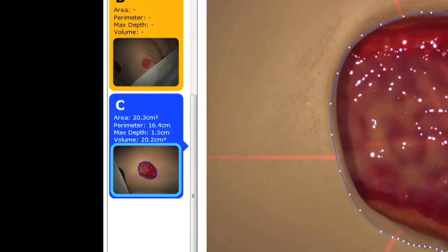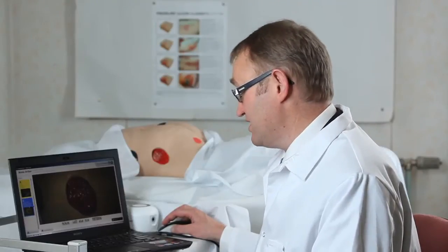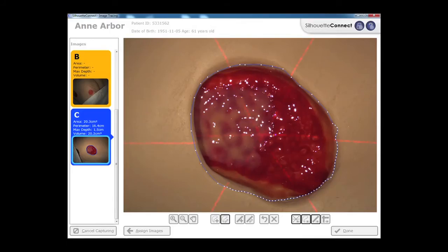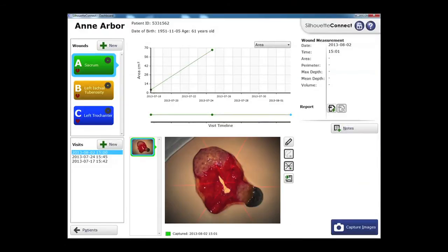So as you can see the surface area is about 20 square centimeters. The maximum depth is one and a half centimeters and the volume is around 19 cubic centimeters. The image acquisition part of the process has now been completed.